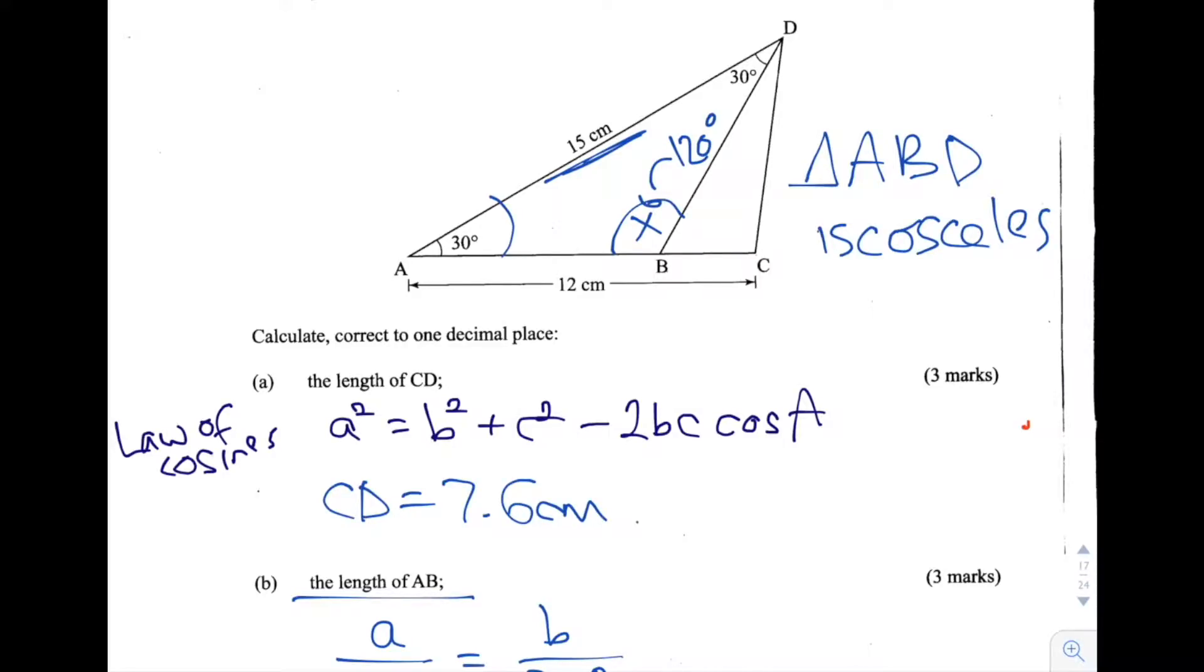Now that we know that the angle at ABD is 120 degrees, we can more easily use the law of sines to work out the value of the length AB.